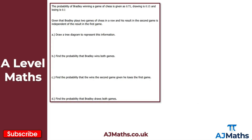For the final question, the probability of Bradley winning a game of chess is given as 0.75, the probability of drawing is 0.15, and the probability of losing is 0.1. Bradley plays two games of chess in a row and his result in the second game is independent of the result in the first game. For part A, we draw a tree diagram with three branches: win, draw, and lose, with probabilities 0.75, 0.15, and 0.1 respectively.